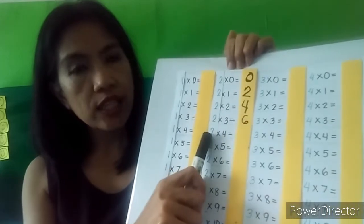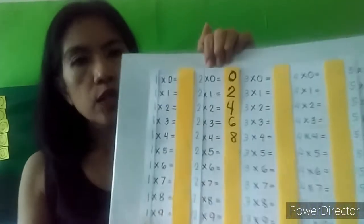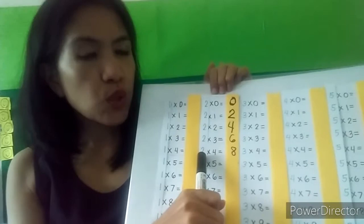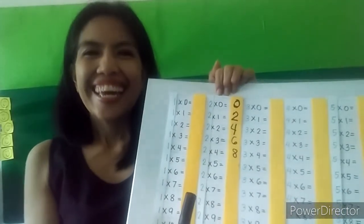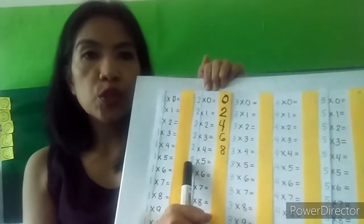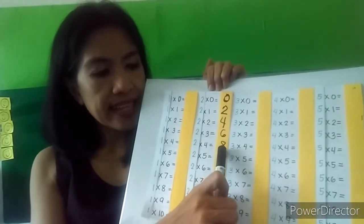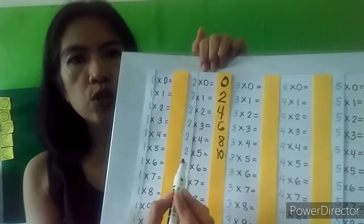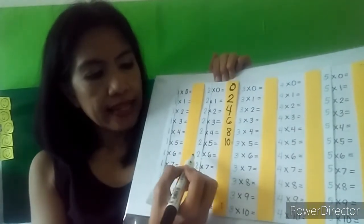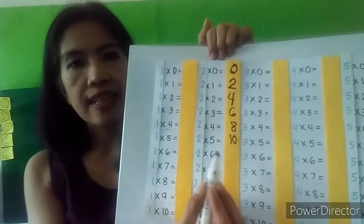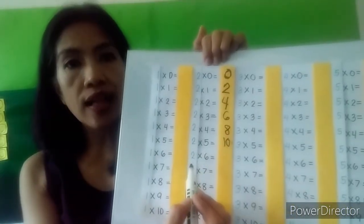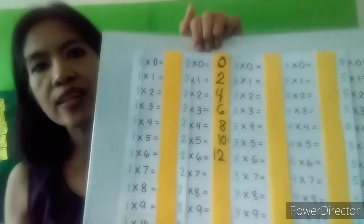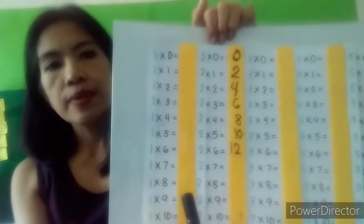Two times four: let's add six plus two, which is eight. So two times four equals eight. Two times five: eight plus two equals ten. So two times five is ten. Two times six: ten plus two equals twelve. So two times six equals twelve.